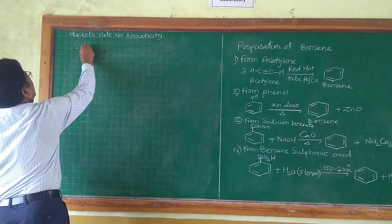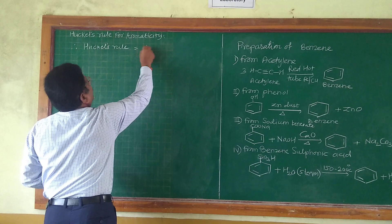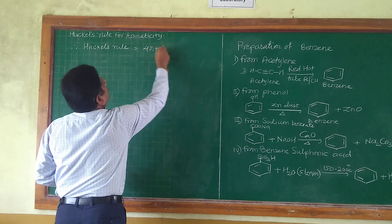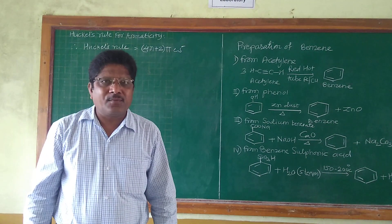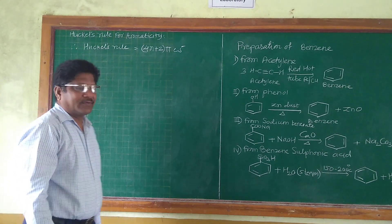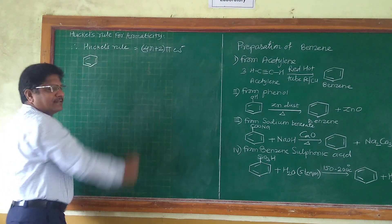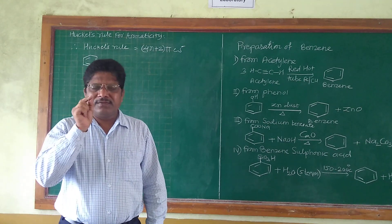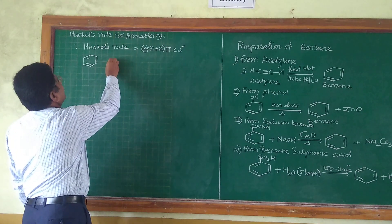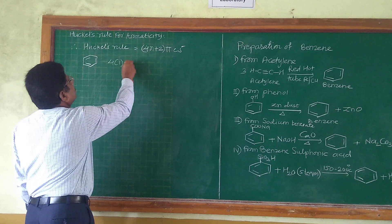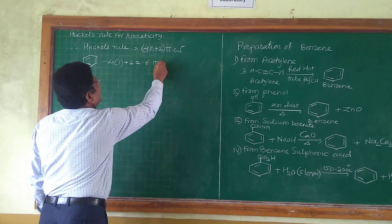Therefore, Hückel's rule states 4N + 2 pi electrons. We can apply this rule for various aromatic compounds. Consider the first example — benzene, which is a well-known aromatic compound.